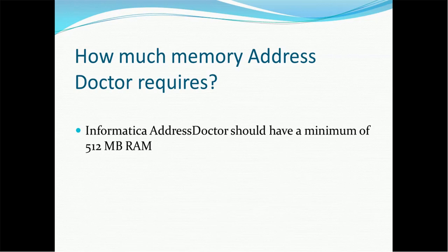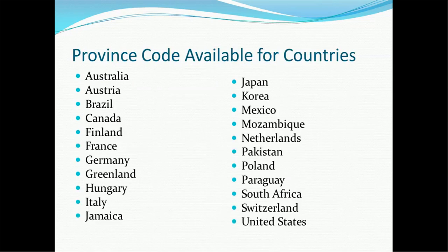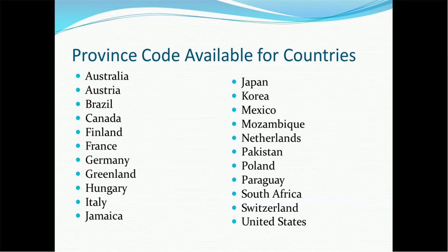Here are some interesting attributes about Address Doctor. Listed here are a few of the countries that provide a province code through Address Doctor: Australia, Austria, Brazil, Canada, Finland, France, Germany, Greenland, Hungary, Italy, Jamaica, Japan, Korea, Mexico, Mozambique, Netherlands, Pakistan, Poland, Paraguay, South Africa, Switzerland, and the United States.